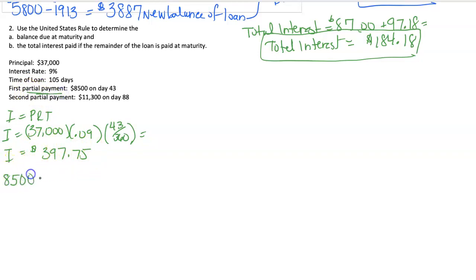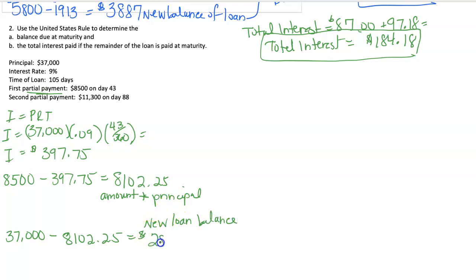We have to pay that first with our first payment. So the $8,500 payment has to first be applied to interest and what's left is the $8,102.25. This is the amount that goes towards principal to make your loan go smaller. So if our loan was $37,000, we're reducing our loan by $8,102.25.